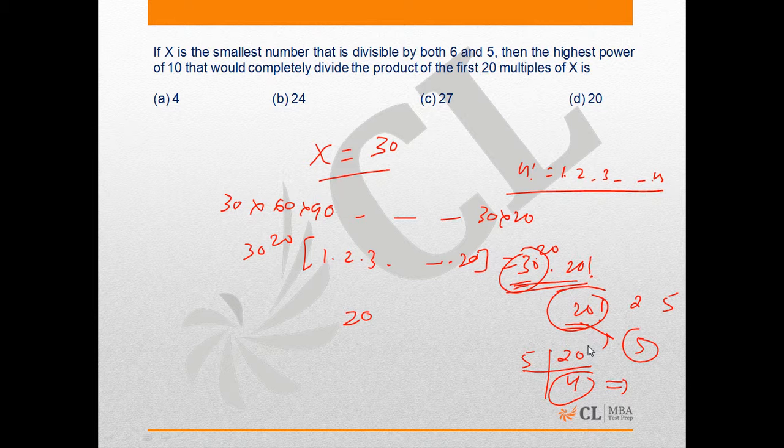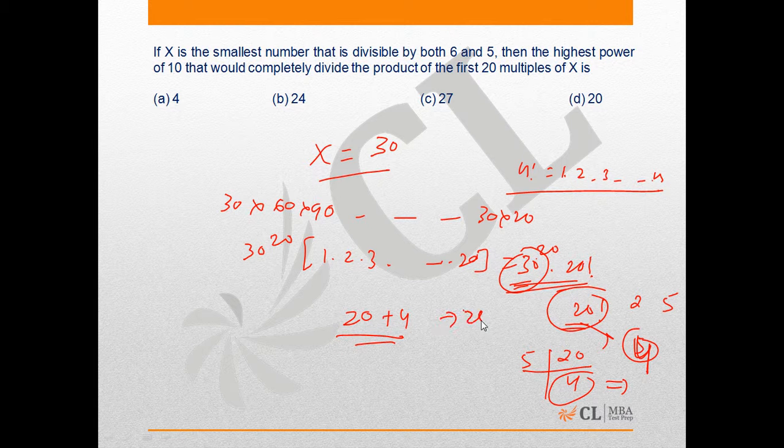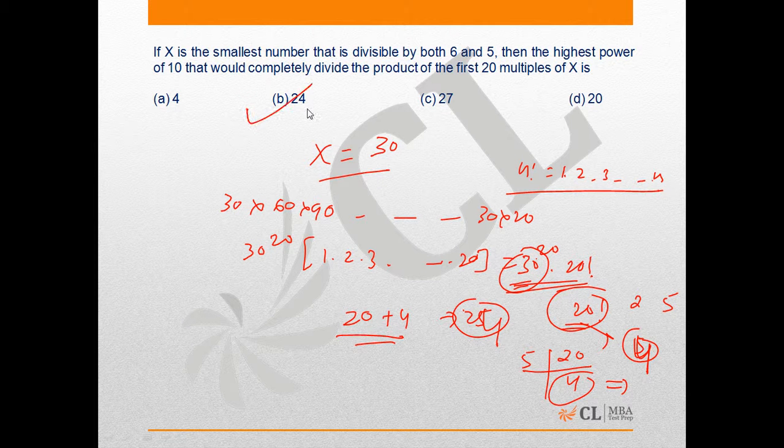So this product contains 20 plus 4 zeros, which is 24. Therefore, the required answer is option b.